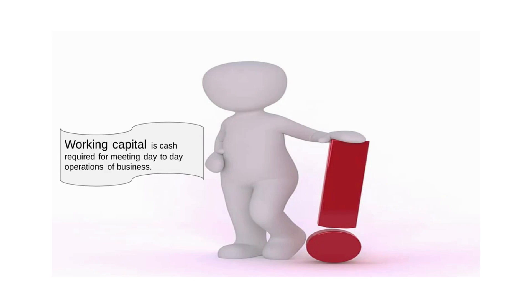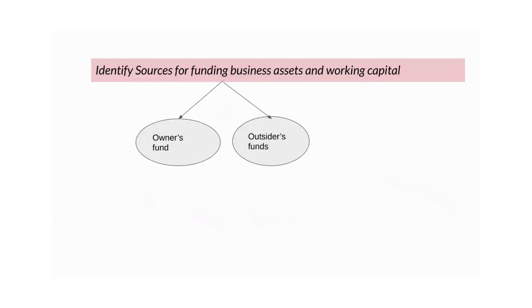Now we have a fair idea about starting and running a business. The previous points cover starting the business, but to run a business we also need working capital. So you should identify sources for funding both the business assets and working capital. We have two types of sources of funding.